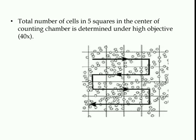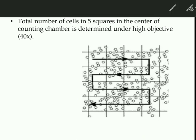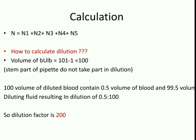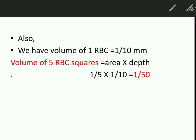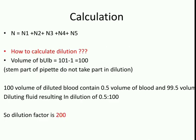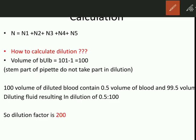The total number of cells in five squares in the center are counted under the high-power objective at 40×. Now moving to calculation: N equals n1 plus n2 plus n3 plus n4 plus n5, where N is the total count from the five squares.